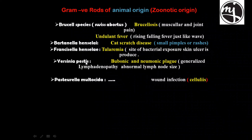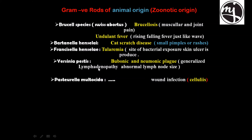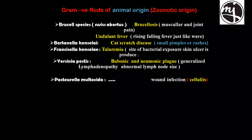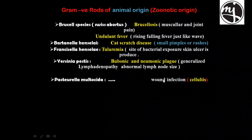Yersinia pestis causes bubonic and pneumonic plague with generalized lymphadenopathy — enlargement of lymph nodes including abdominal and mediastinal lymph nodes. Pasteurella multocida causes wound infection and cellulitis — inflammation of soft tissue.